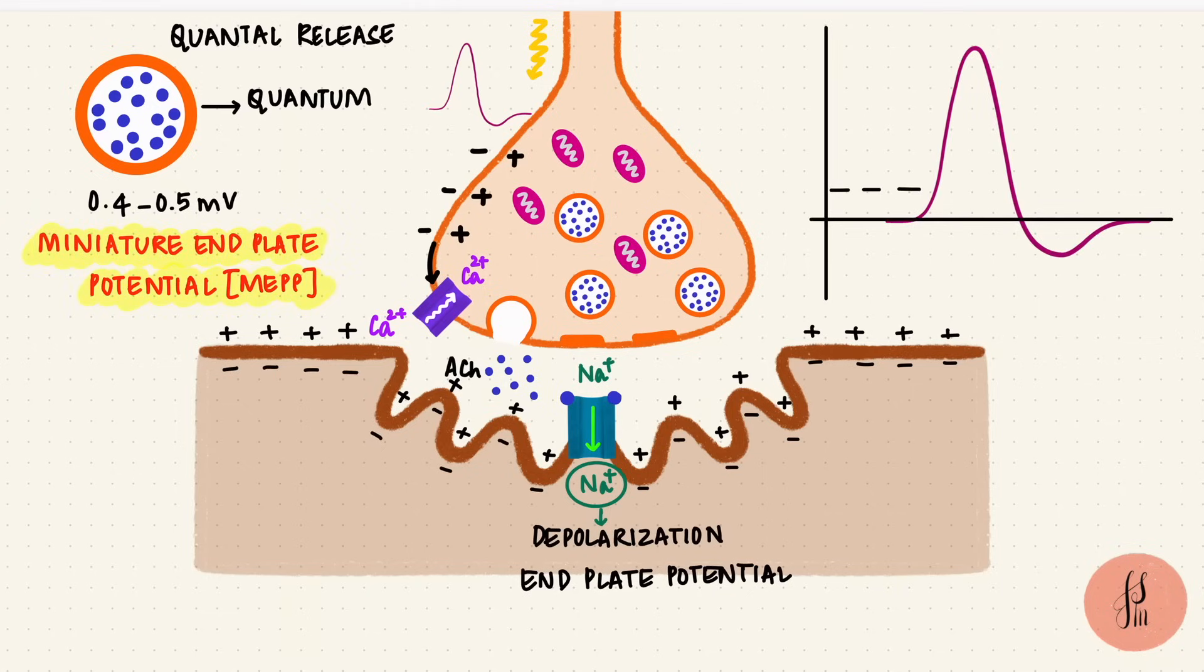But these aren't enough to create an action potential. Remember, an action potential requires the potential to come up to a threshold. The resting membrane potential of a skeletal muscle is around negative 90 millivolts. For an action potential to happen, it has to get up to threshold, which let's say is around negative 50 millivolts.